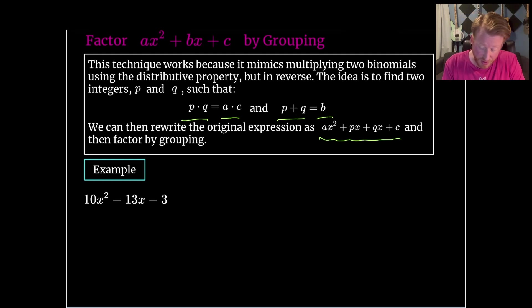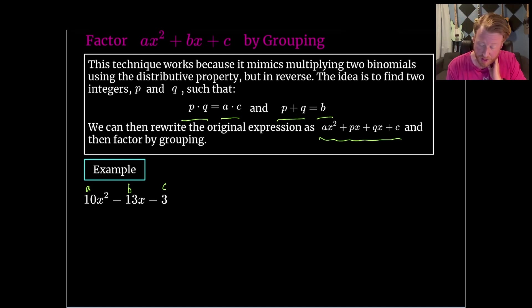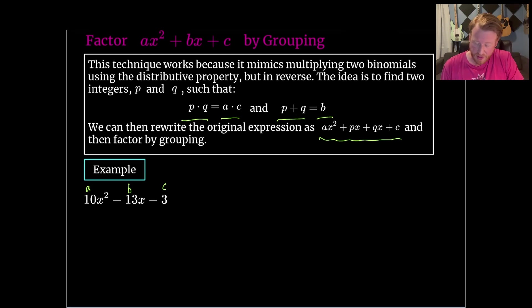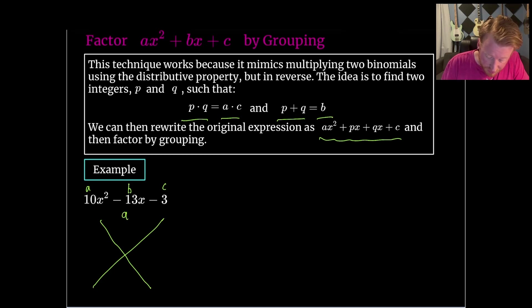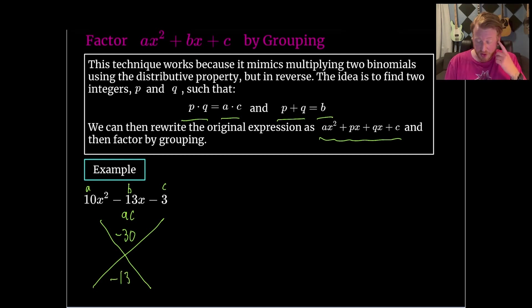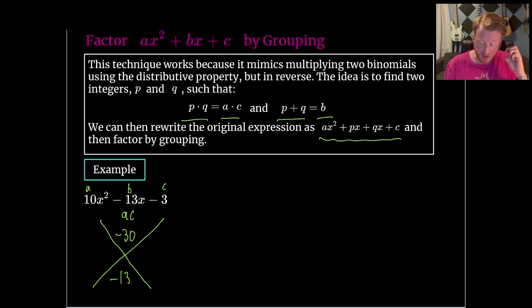There's a little bit of guess and check involved here, though in my opinion this reduces the amount of guess and check as much as possible. We've got 10x² - 13x - 3. We can call these the a, b, and c terms — make sure you take the signs along: b is negative 13 and c is negative 3. This is sometimes called the diamond method. In the top of the diamond we write a × c, which is 10 times negative 3 = negative 30. In the bottom we write b = negative 13. We're looking for numbers that multiply to negative 30 and add to negative 13. Because we're limited to factors of 30, there's only so many things to guess and check.